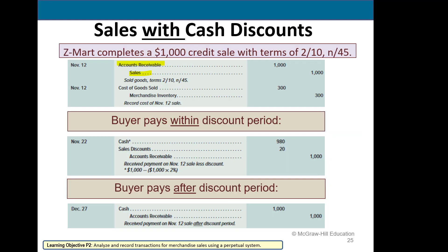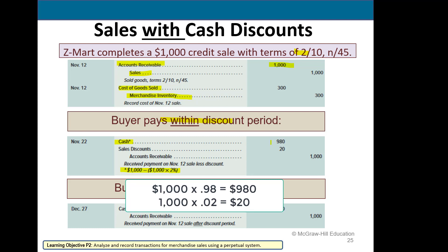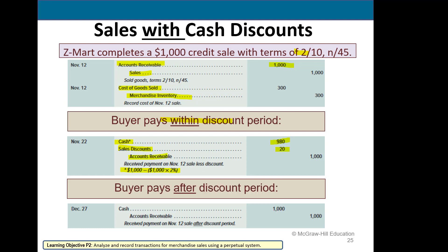Now we'll look at a sale with a discount. They made a sale on November 12th on account: debit accounts receivable, credit sales. The cost side: debit cost of goods sold, credit merchandise inventory. If they pay within the discount period, we debit cash for $1,000 times 98% — that's $980 — debit sales discounts for the $20 discount amount, and credit accounts receivable for the full $1,000 to clear out their balance. If the buyer pays after the discount period, simply debit cash and credit accounts receivable for the full amount.